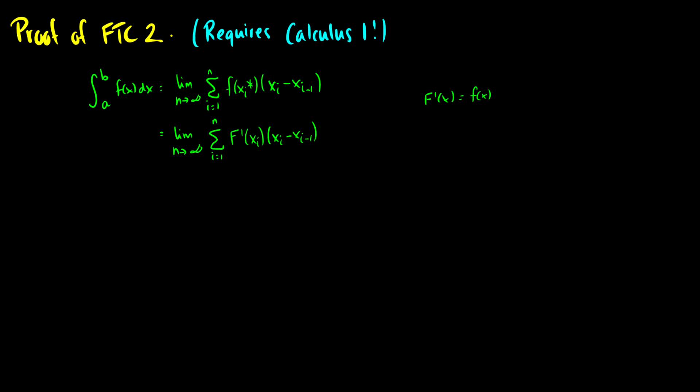Okay, now what do we know about the mean value theorem? This is something you probably forgot. But what this says is that the derivative f of x_i* is going to equal the right side of an endpoint minus the left side of the endpoint. This should be f of x_i minus 1 over the delta x, which just happens to be x_i minus x_i minus 1. So you should probably review the mean value theorem if you can.